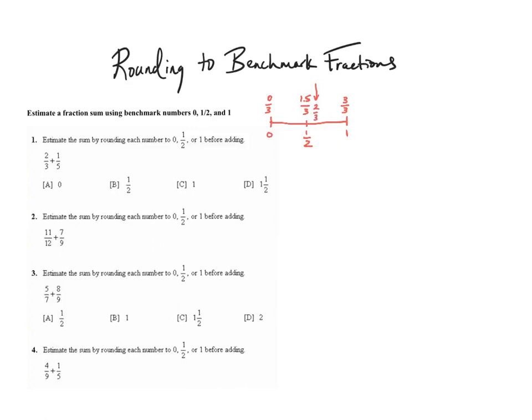You'll notice that 2 thirds is only half of 1 third away from 1 and 1 half, whereas it's 1 whole third away from 3 thirds. So 2 thirds is closest to 1 half. I'm going to mark this out and put 1 half in place of 2 thirds, because I am rounding each number to either 0, 1 half, or 1 whole.